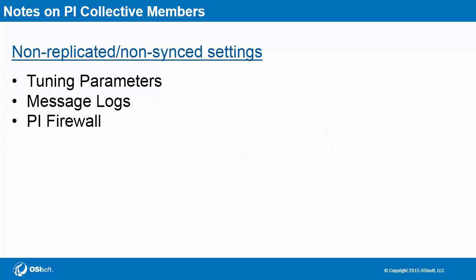There are some parameters that are never replicated or synced. These include tuning parameters, message logs, and PI firewall settings. Tuning parameters are a subset of PI data archive settings that are usually specific to the machine hosting the PI data archive and are not appropriate to be replicated. Message logs too are inherent to their specific machine and it doesn't make sense to sync across computers. PI firewall is a built-in firewall that can allow or restrict certain IP addresses. These settings also shouldn't be synced since multiple PI data archives could reside on different networks and not need the same firewall settings.